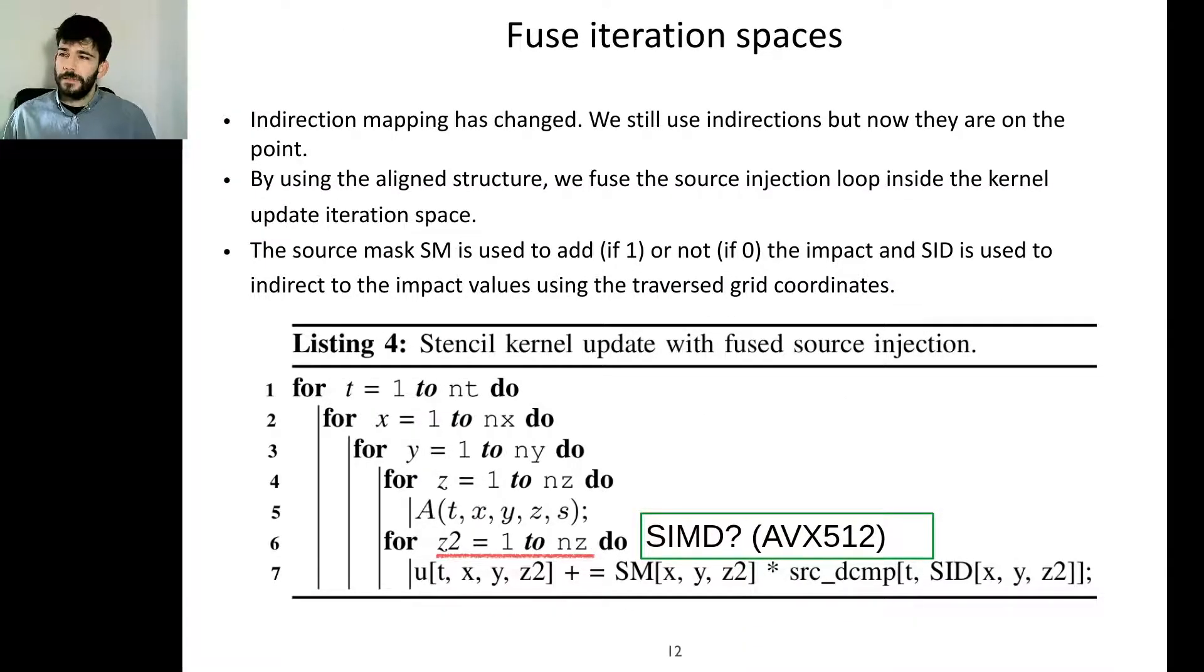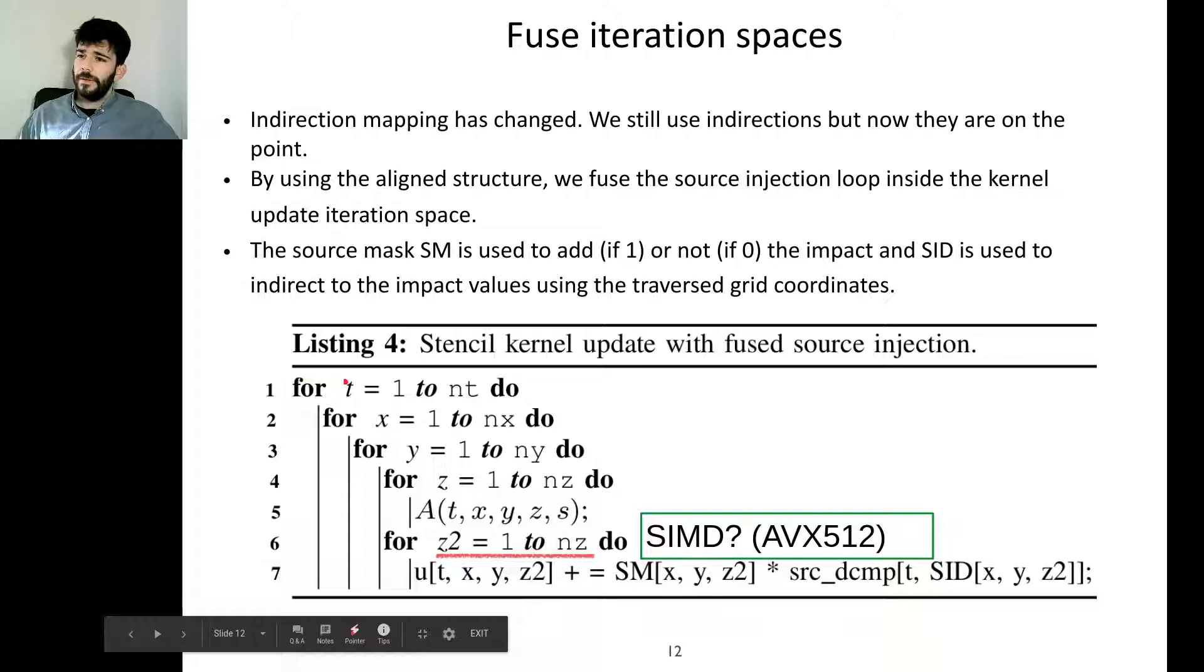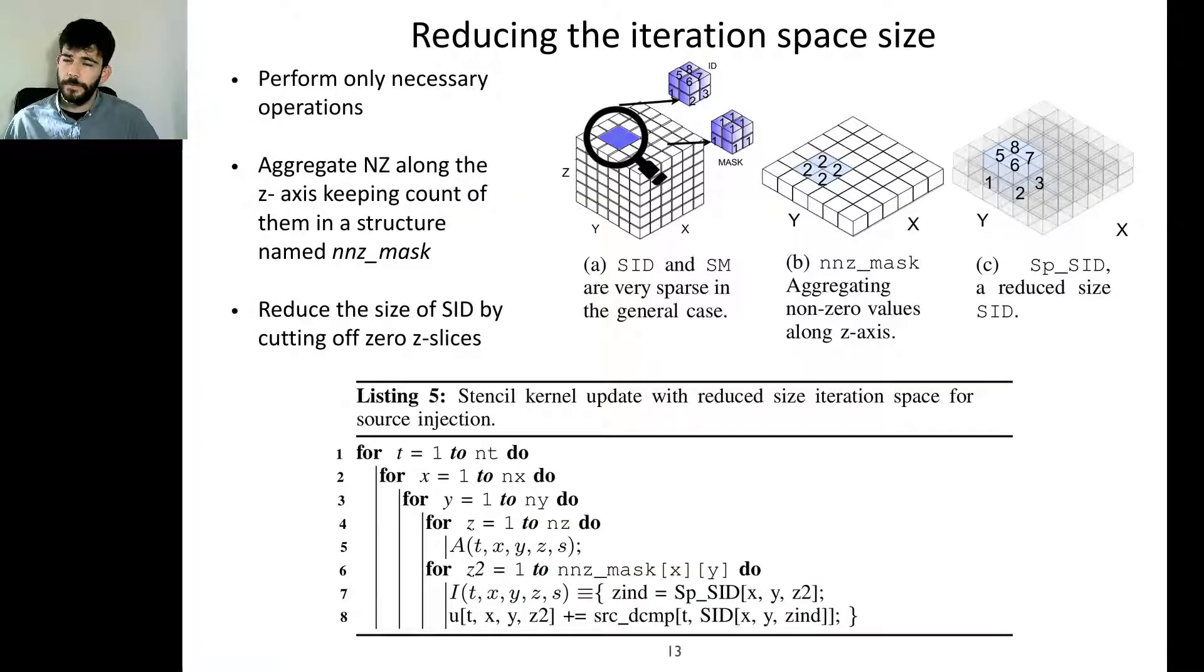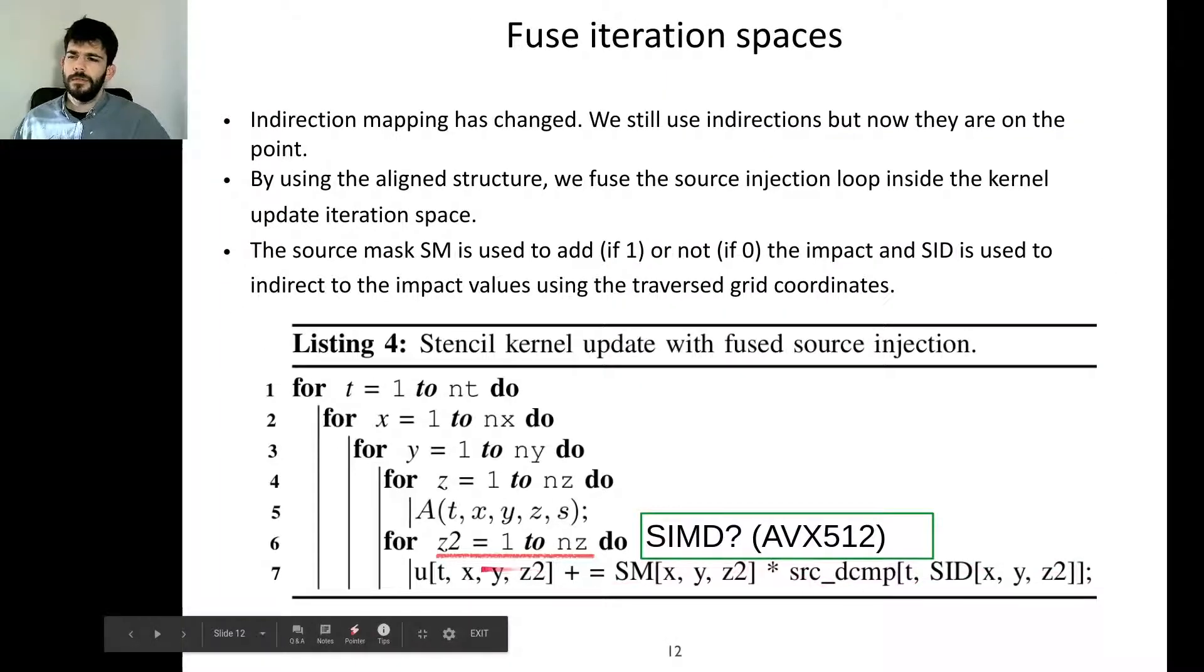Then we need to fuse these two iteration spaces because now we are able to get rid of the source iteration space. Since the sources are aligned to the grid points we can iterate through them using the grid coordinates. Using the aligned structure we fuse the source injection loop inside the kernel update iteration space. We keep the time loop, the x and y loop, and then there is a new z loop nested under the y loop to do just the source injection update. Source mask defines whether we should add or not the new decomposed source value. This also helps to possibly arise SIMD opportunities on some platforms.